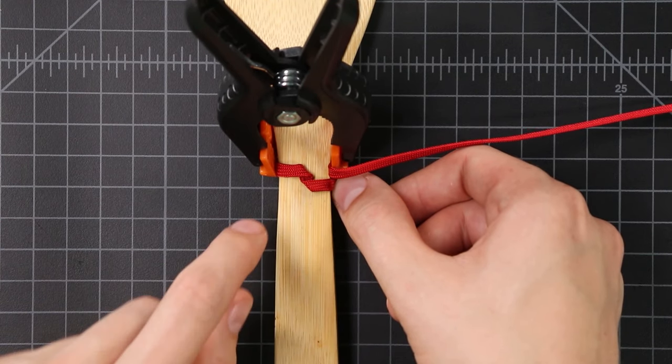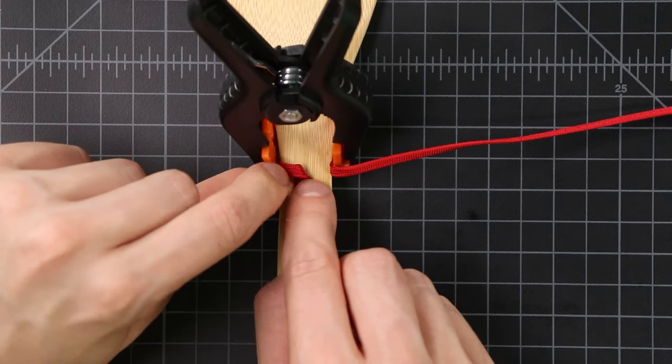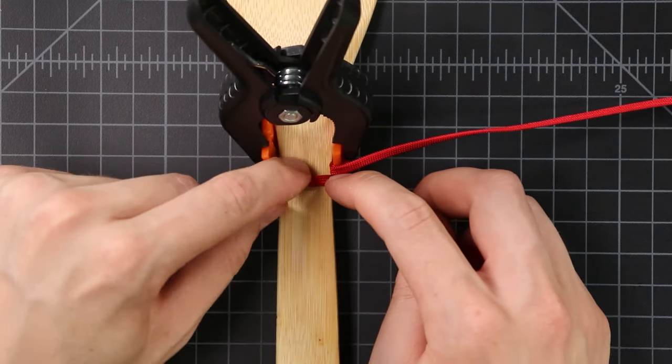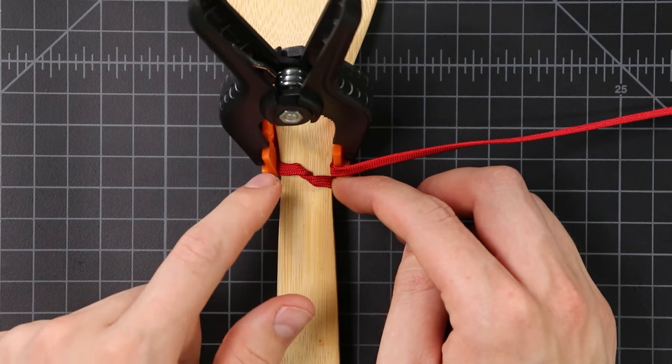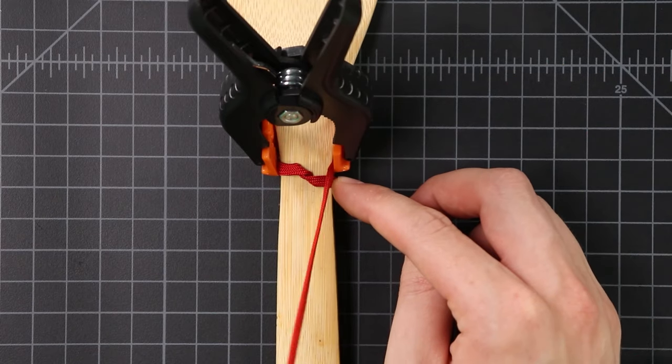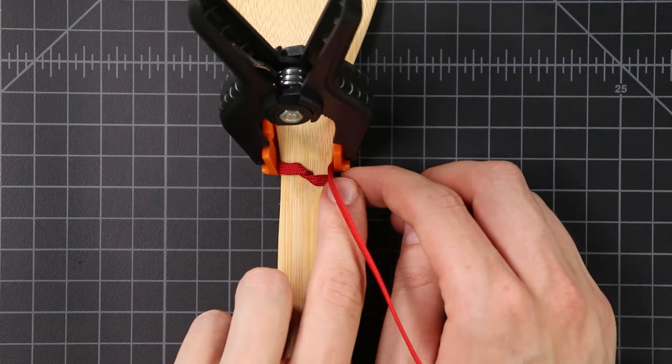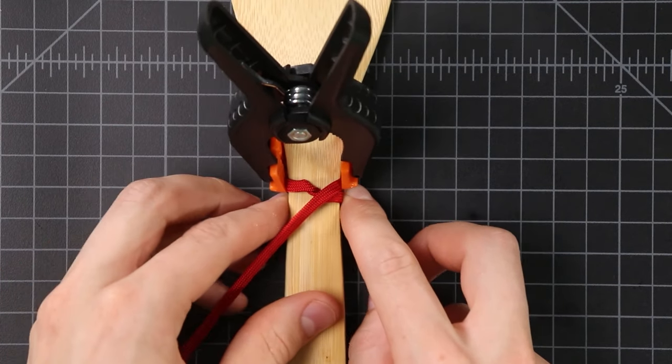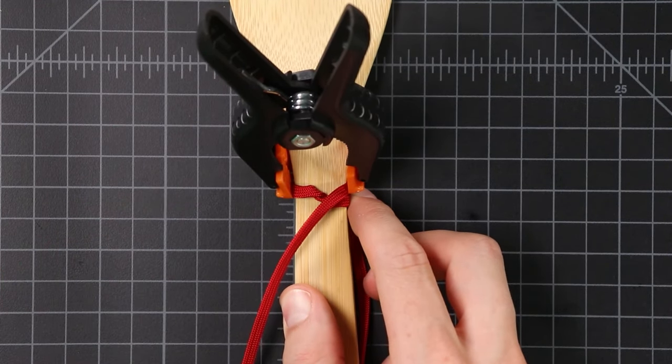And we want that to be right in the middle of our handle. I'm gonna scoot it back a little ways. We've got kind of one direction of an X. Then with our other side we're gonna do the same thing right on top of it. You want to keep that first side secure.